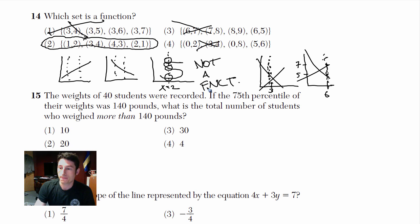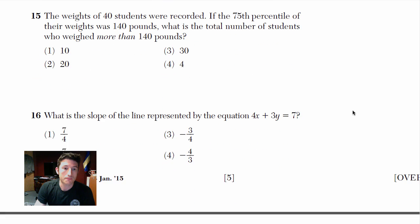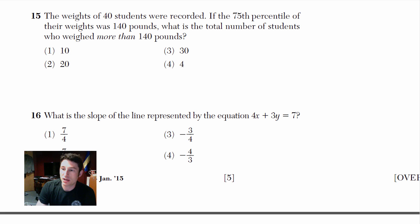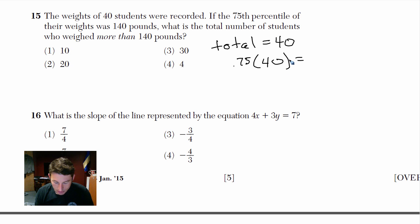The weights of 40 students were recorded, and the 75th percentile of their weights was 140. For percentiles, I write down the total: total equals 40. We want to know what 75% of those students' weights were at 140. So 0.75 times 40 equals 30 — that means 30 students were at or below the 75th percentile.